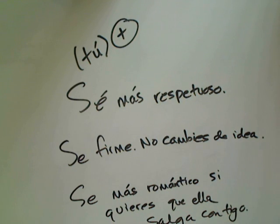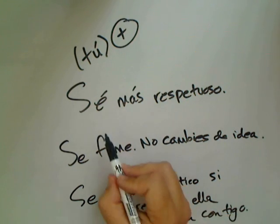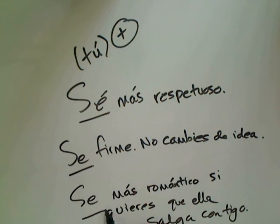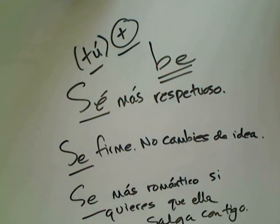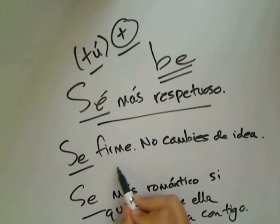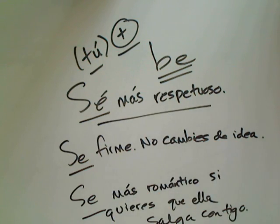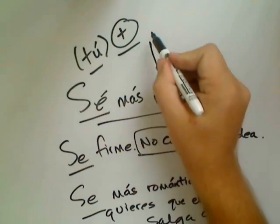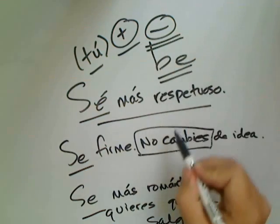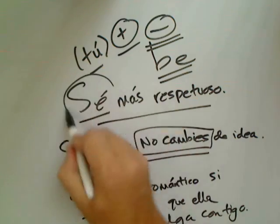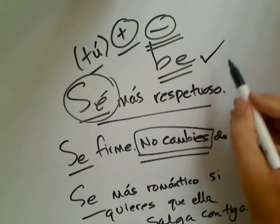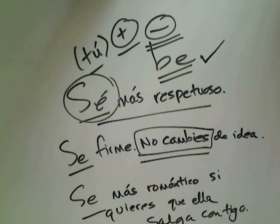So just a couple of observations. We're using SÉ as the equivalent of BE in the affirmative familiar tú command — be more respectful, be firm, don't change your idea, be more romantic. Notice, however, that if we have a negative command, we just use the subjunctive form. So the first use of SÉ with an accent is a form of the verb SER in the affirmative tú command.